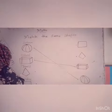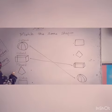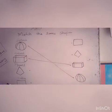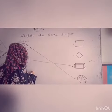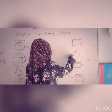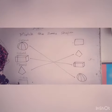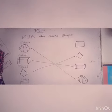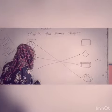Which shape is this? Pyramid. We have to match it with another pyramid. And which shape is this? Cube. So, we have to match it with another cube.